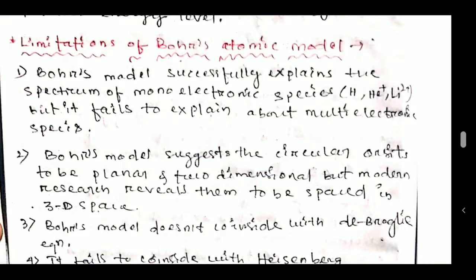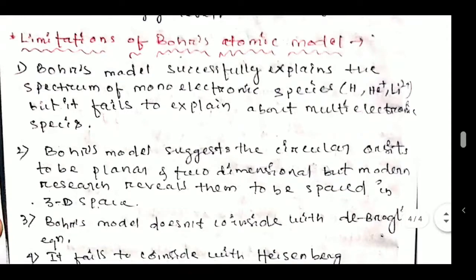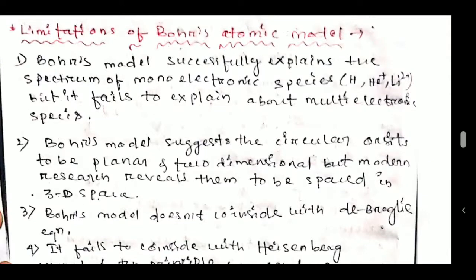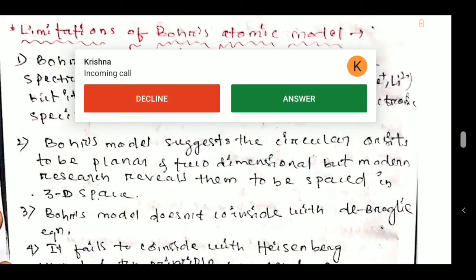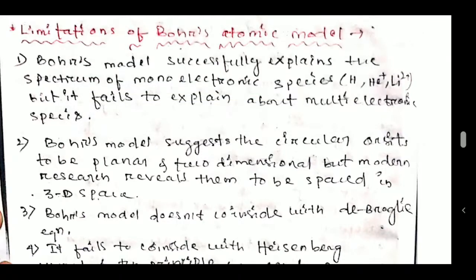Second limitation: Bohr's model suggests circular orbits to be planar and two-dimensional, but modern research reveals them to be spaced in three-dimensional space. Bohr explained only for two dimensions, not three dimensions; these orbits are arranged in a line, not in 3D.